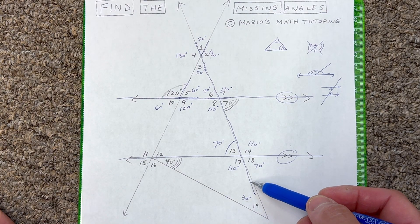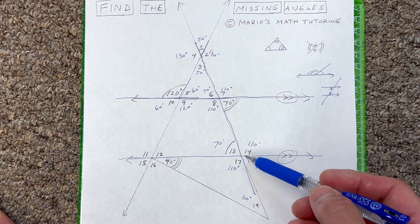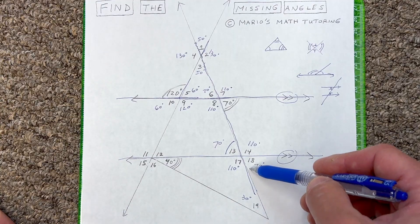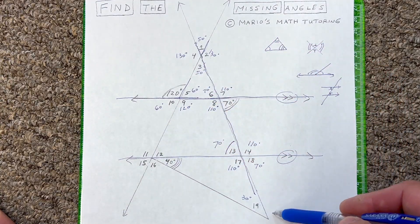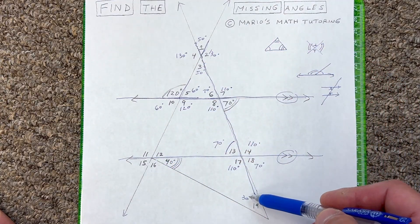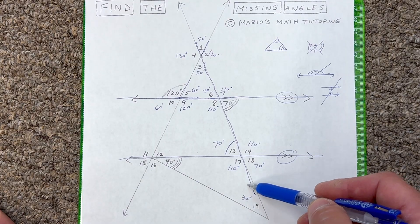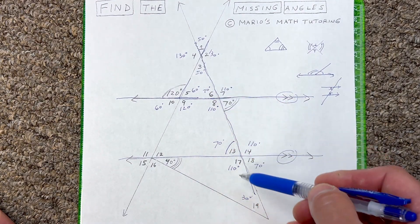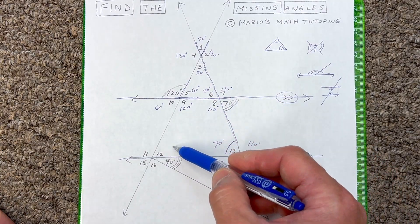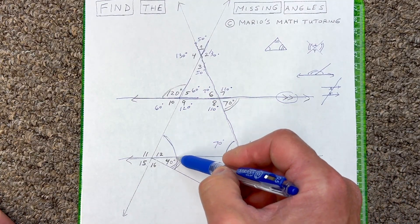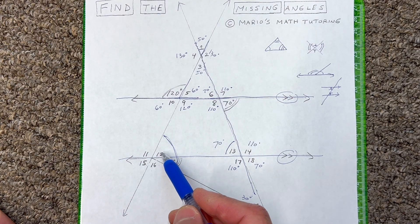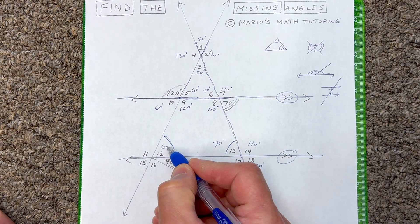Now let's see what else we can figure out. We've got this larger triangle, and all those angles have to add up to 180. We've got 30 degrees at one vertex and 50 degrees at another — that's 80 degrees — meaning this whole angle has to be 100 degrees.